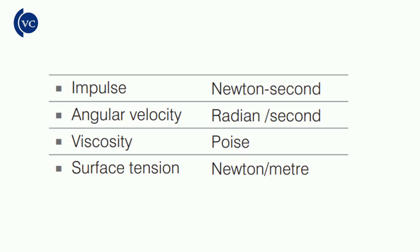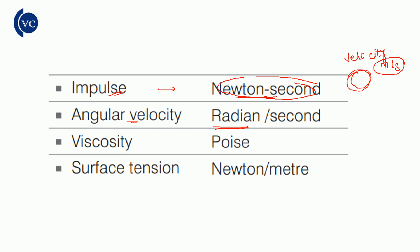Impulse — the unit of impulse is Newton into second. Angular velocity — the unit is radian per second. Normal velocity is meter per second, but angular velocity is different. When a body moves in a circular path, we use angular velocity.